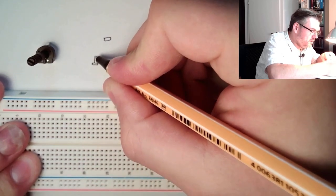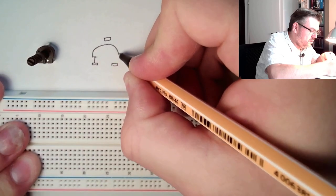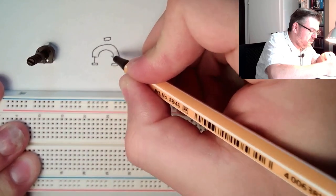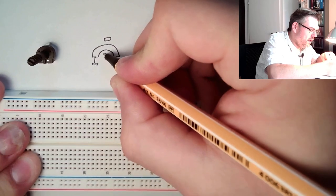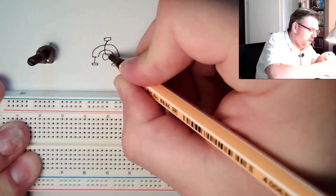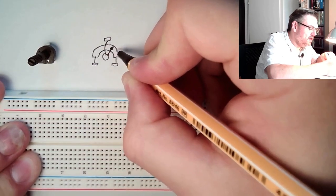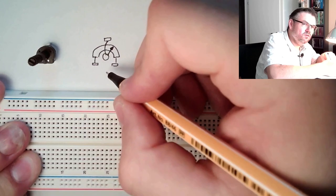And these two connectors have a resistor in between, and the turning knob is connected to the third connector and is somehow touching this resistor, dividing this resistor into two parts.